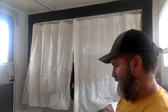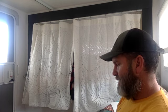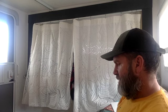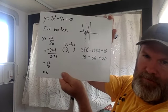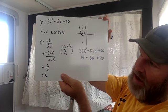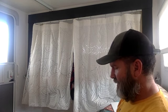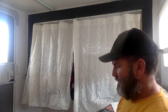3 squared is 9, and 2 times 9 is 18. So it's 18 minus 36, plus 20. The 3 squared is 9, and 2 times 9 is 18. And then you do the math and you get negative 18 plus 20, which is positive 2.